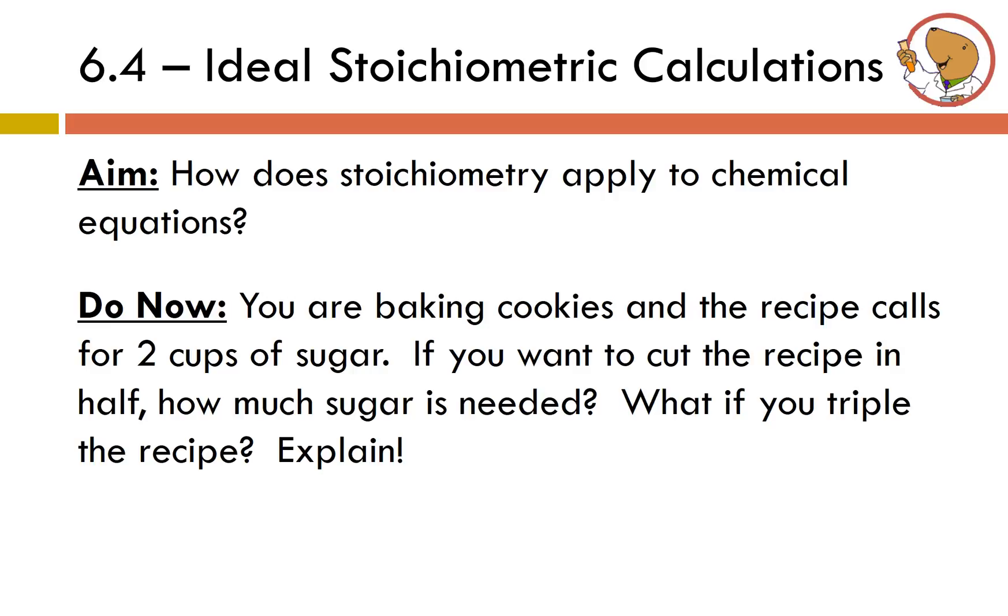You actually perform stoichiometry all the time if you're somebody who follows recipes. So let's take a look at the do now. You are baking cookies and the recipe calls for two cups of sugar. If you want to cut the recipe in half, how much sugar is needed? What if you triple the recipe? Explain.